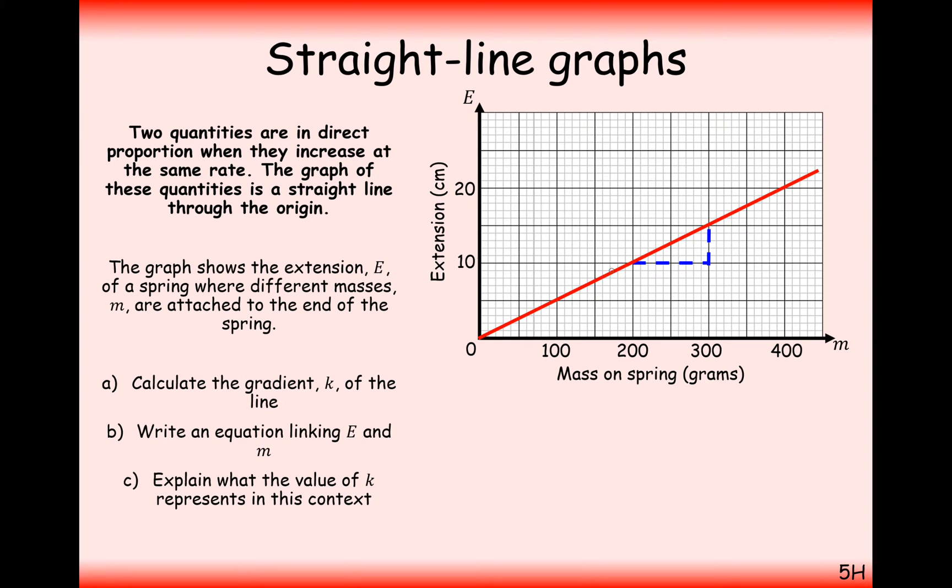What you can do to work out the gradient to start with on part A is to select any two coordinates on that line and work out the gradient of those two points. It doesn't matter how far you take your gradient or where the position is on this gradient, because it's a straight line it should have a constant gradient throughout the line.